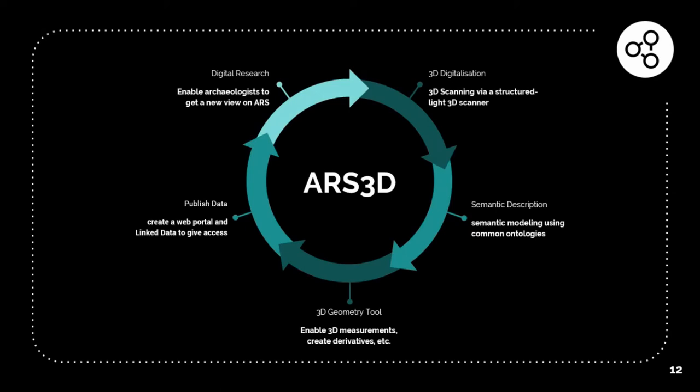We have some kind of project circle. In the beginning we are doing the 3D digitization, then we'll do the semantic description of the whole objects, we'll build up some 3D geometry tools, and in the end publish all the data in some kind of web portal to enable digital research. Maybe we can start from the beginning with other collections, not just in Mainz, for example in Heidelberg or Munich or even in Tunisia, to have a huge collection on the web.